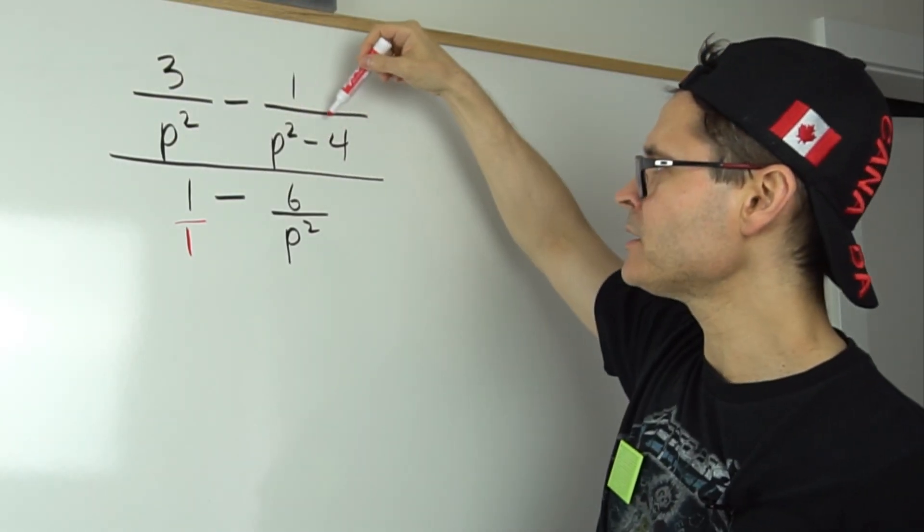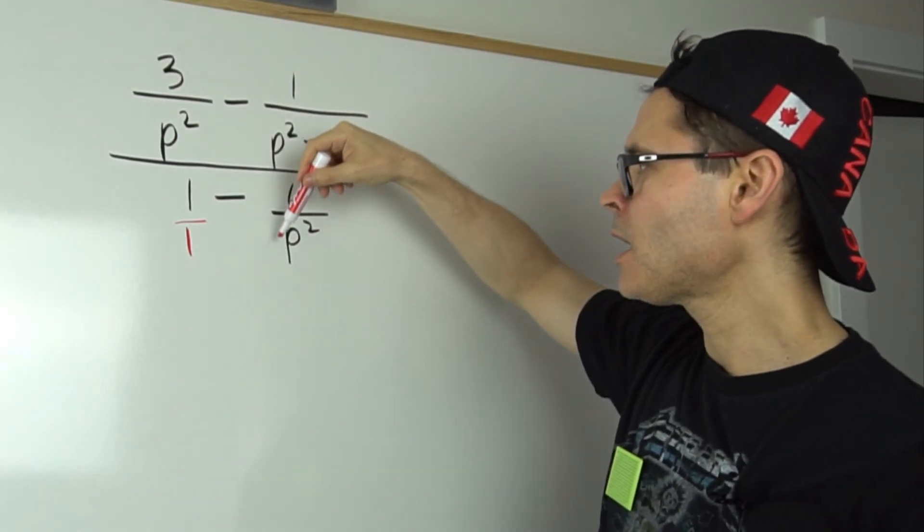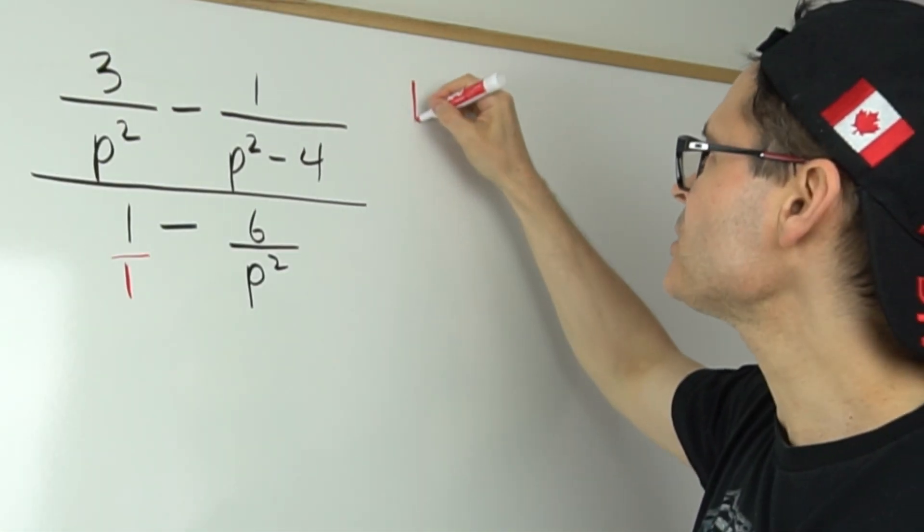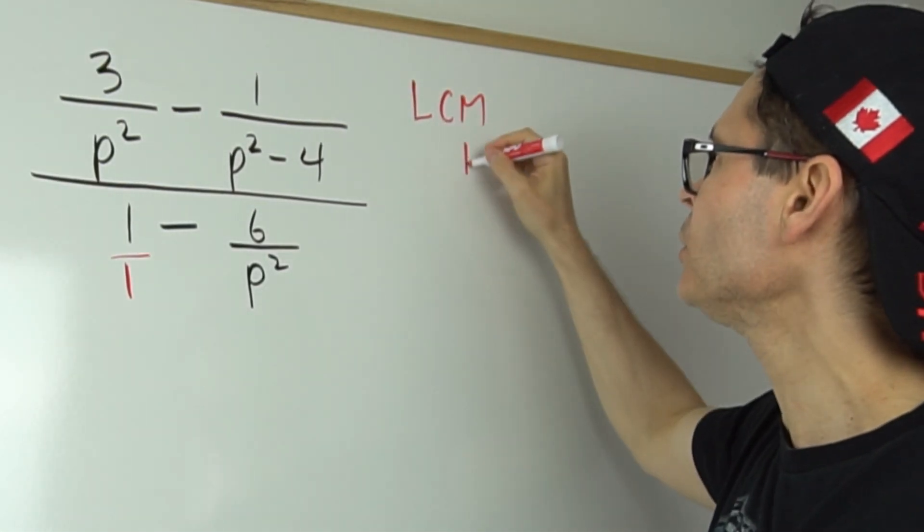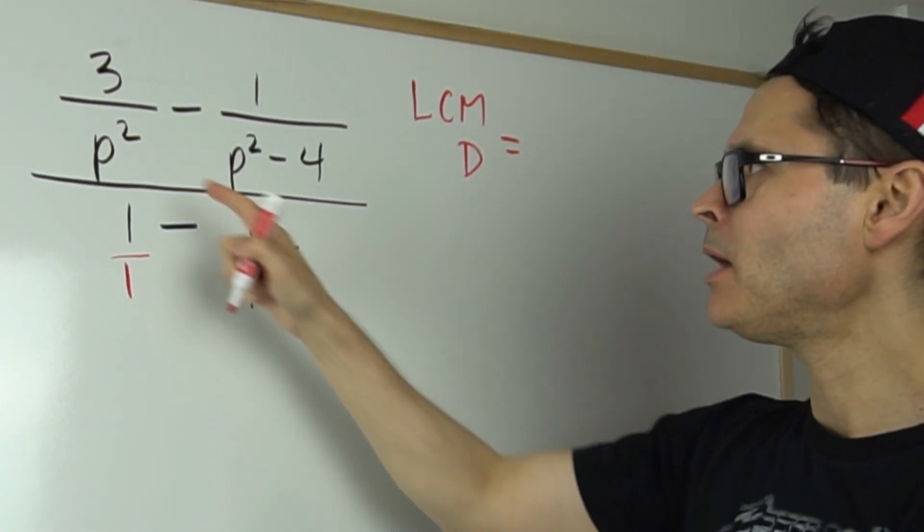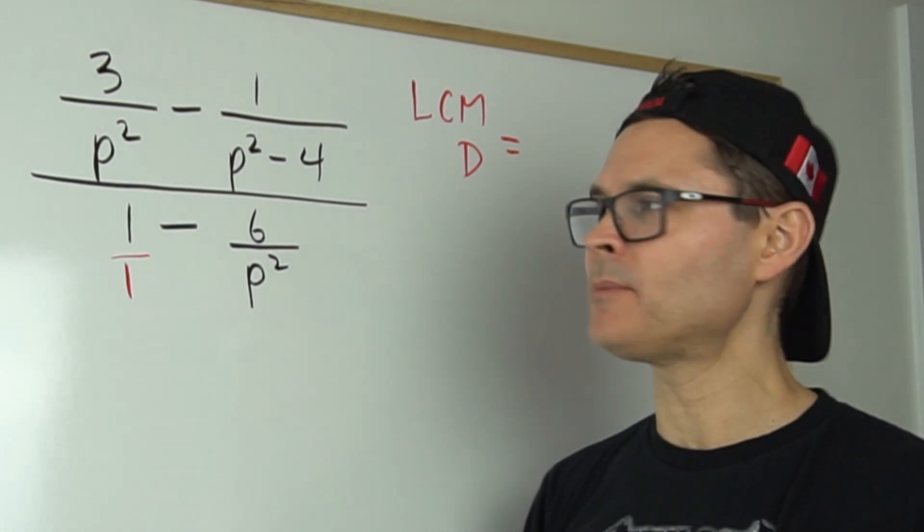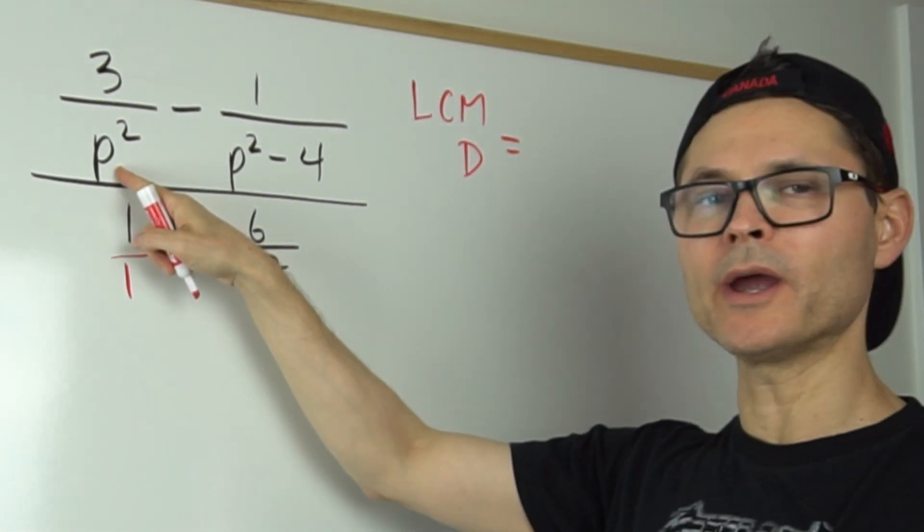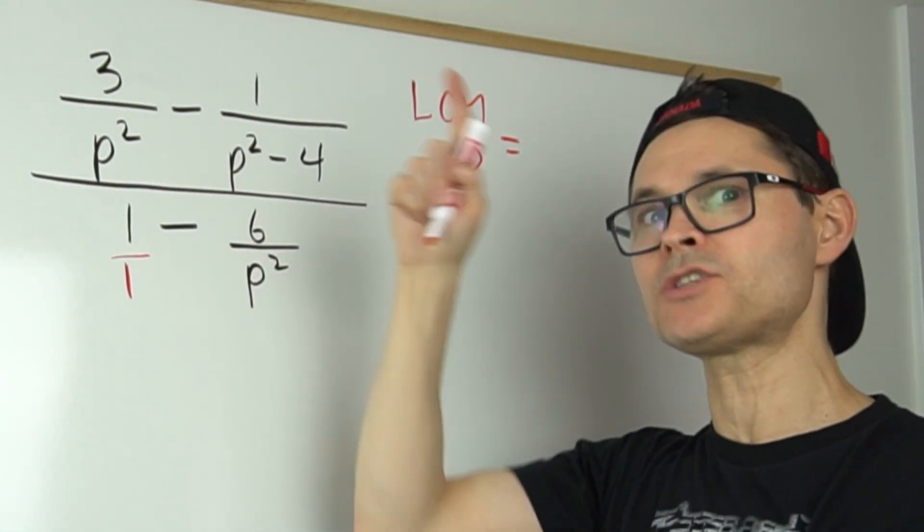So notice I've got a p squared, a p squared minus four, a p squared, and a one. I could ask myself what's the lowest common multiple, or the lowest common denominator, among all of these baby denominators. Obviously I need a p squared, so what I'm after is something that p squared goes into.